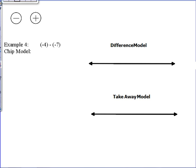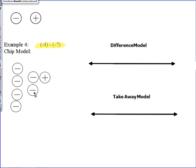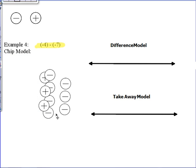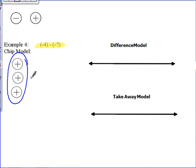Example four is different from the previous three — we are subtracting two negative integers: negative four minus negative seven. We start out with four negatives and need to take away seven negatives. Since we only have four, we borrow zero pairs — three of them — to give ourselves seven negatives to take away. We remove those seven negatives from the board, and the remaining value is positive three.